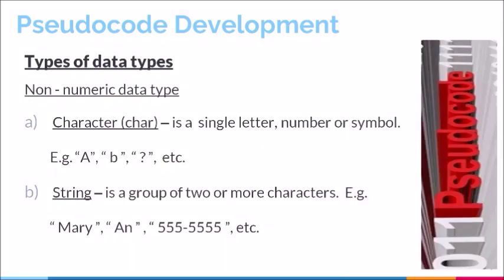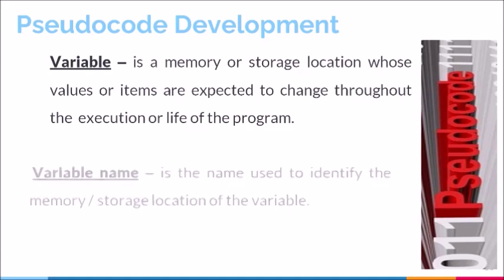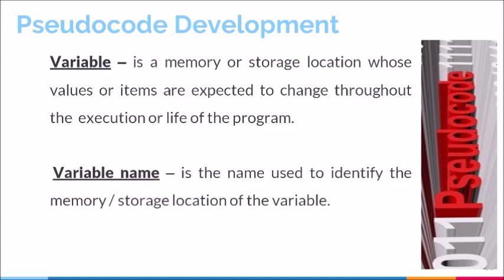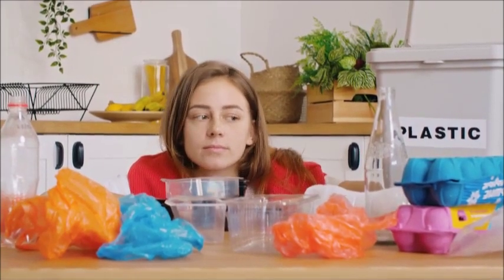The other key term from the definition of declaration is the term variable. A variable is a memory or storage location whose values or items are expected to change throughout the execution or the life of a program. The variable is just a storage or holding location for the values that will be entered. These variables are made reference to by their variable names. Variables can be seen as storage containers that can hold one item at a time, specialized based on data type.